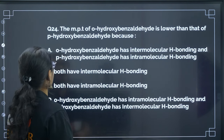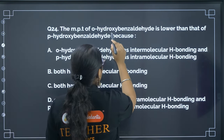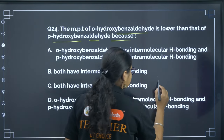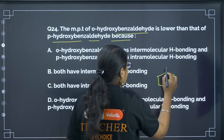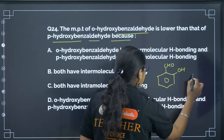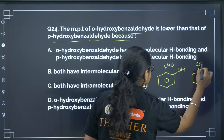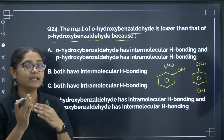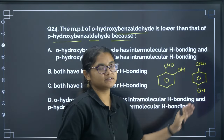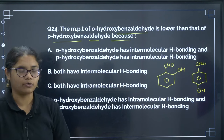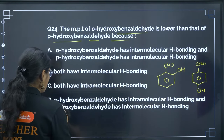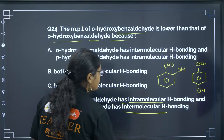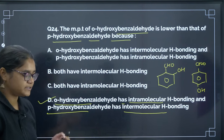Next: the melting point of ortho-hydroxybenzaldehyde is lower than that of para-hydroxybenzaldehyde because — ortho-hydroxybenzaldehyde is involved in intramolecular hydrogen bonding, whereas para-hydroxybenzaldehyde is involved in intermolecular hydrogen bonding. Intermolecular hydrogen bonding raises the boiling/melting point more. The correct answer is option D.